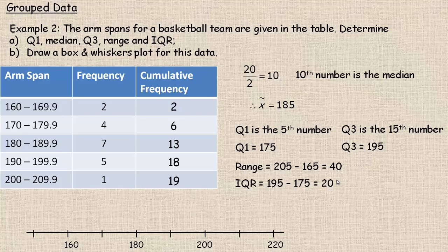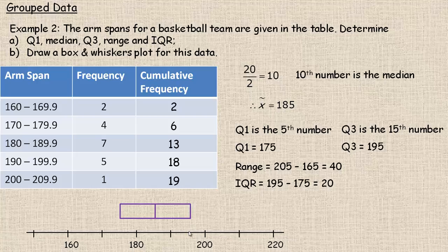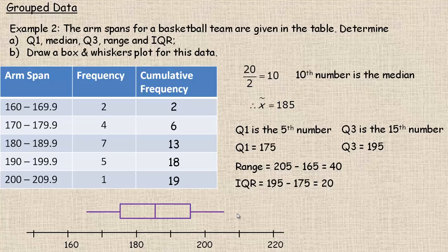To draw the box and whiskers plot: the lower part of the box is at Q1 = 175, the upper part at Q3 = 195, and the median line at 185. The lower whisker extends down to 165 (the midpoint of the bottom interval) and the upper whisker extends up to 205 (the midpoint of the top interval).